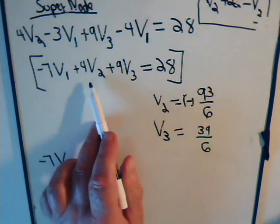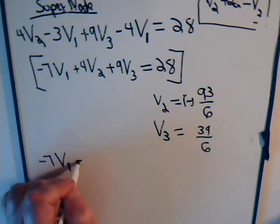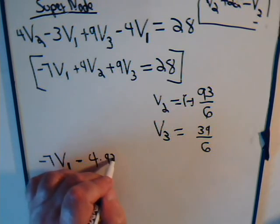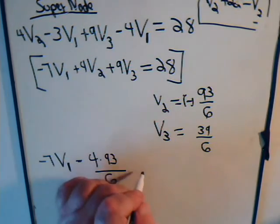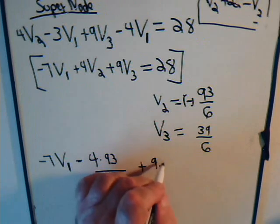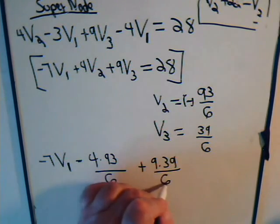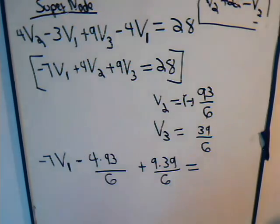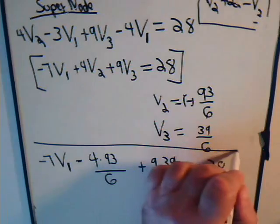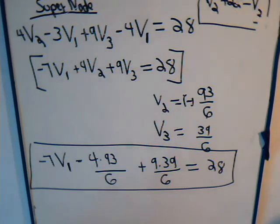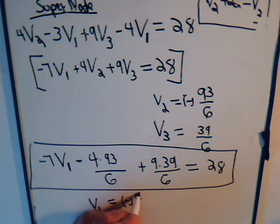Where V2 equals minus 93 over 6, V3 equals plus 39 over 6. So here we have minus 7 times V1, 4 times V2 that's minus 4 times 93 divided by 6, and here we have plus 9 times V3, plus 9 times 39 divided by 6, has to equal 28. So do the algebra and solve for V1.